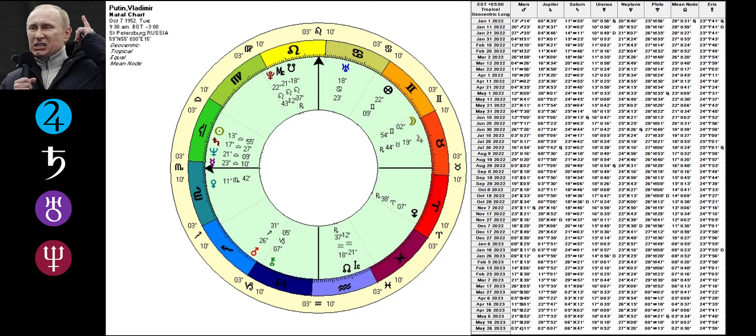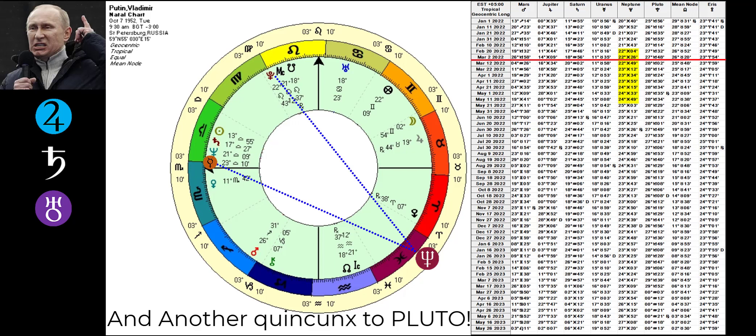The point is, because the quincunxes are part of the equation, in my book, these actions have to be branded as unwise and misplaced. Notice that right now, as we speak, and concurrent with his ordering of the invasion, transiting Neptune is within range of making a quincunx to his Mercury, the mind planet, something which isn't exactly going to promote clear-minded thinking, and this is not going to let up until the spring of 2023.